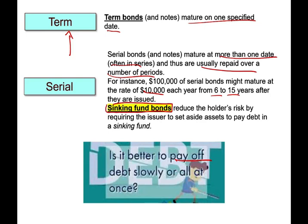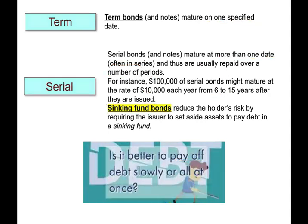Oftentimes the issuer requires a sinking fund bond, which reduces the holder's risk by requiring the issuer to set aside assets to pay off the debt. When we say sinking fund bonds, it means putting money away to pay that bond. The lender asks you to do so to protect themselves.